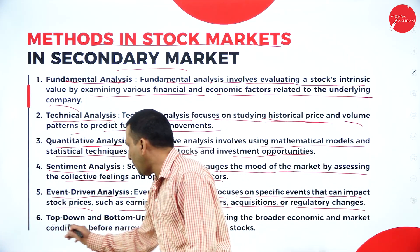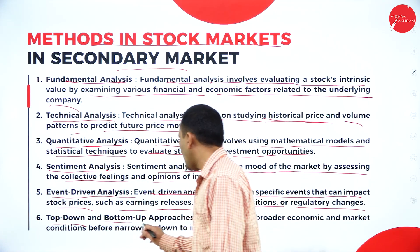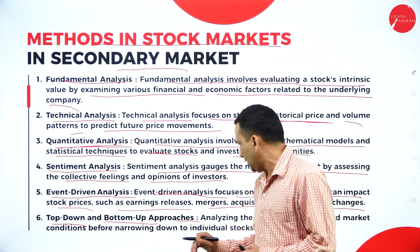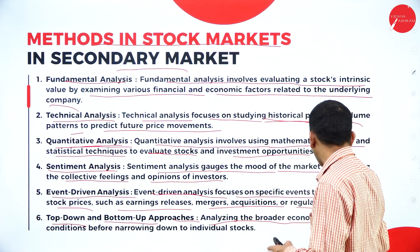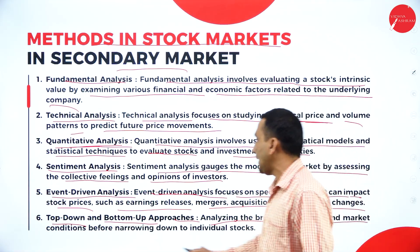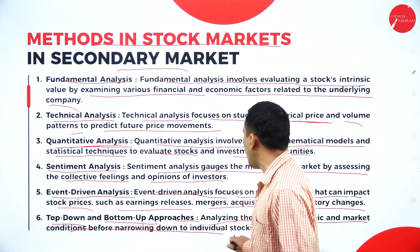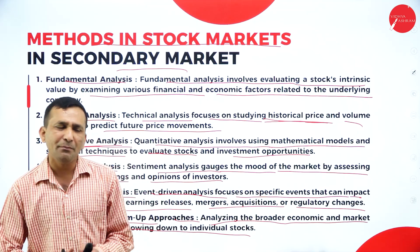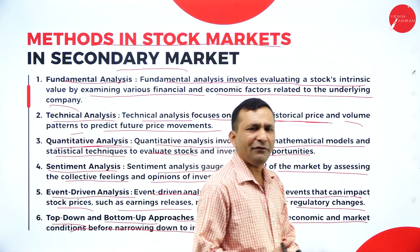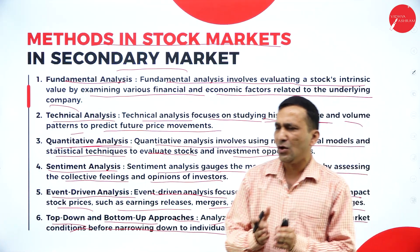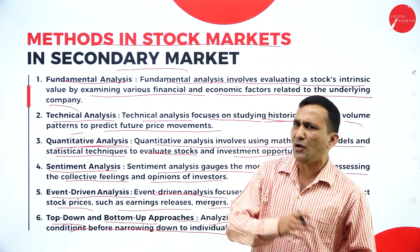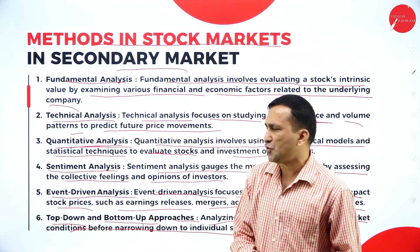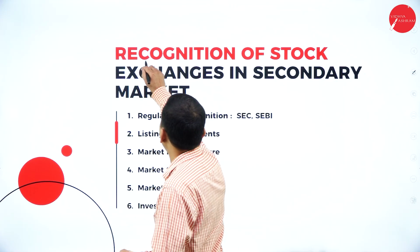Next is the top-down and bottom-up approach. Top-down involves analysis of broader economic and market conditions before narrowing down to individual stocks. There are different types of companies or listings giving an offer to investors, either in the primary market or secondary market. So obviously there is an approach involved here.